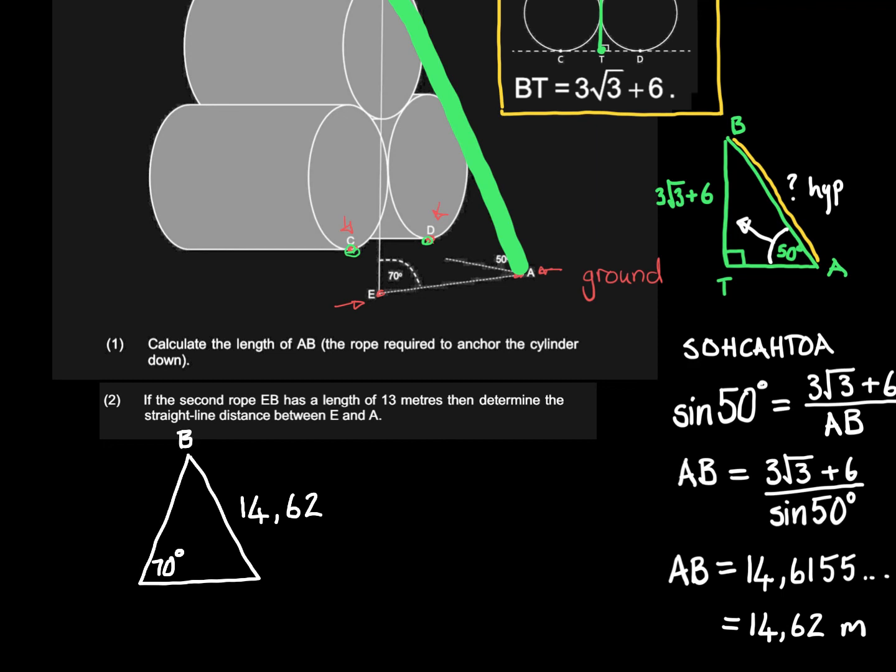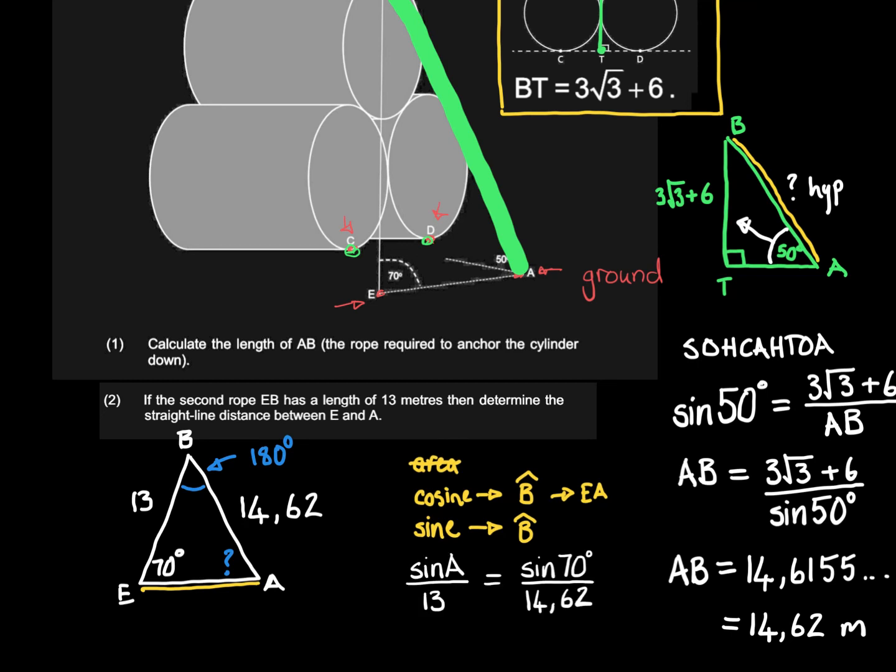This was B, this was A, this was E, and we're told that this is 13. We need to figure out what EA is. This means we're either going to use the area rule, cosine rule, or sine rule. We're not talking about area. To use the cosine rule or sine rule, we need to figure out what angle B is. The easiest way to do this would be to use the sine rule to figure out what angle A is, and then look for angles in a triangle because they add up to 180 degrees.